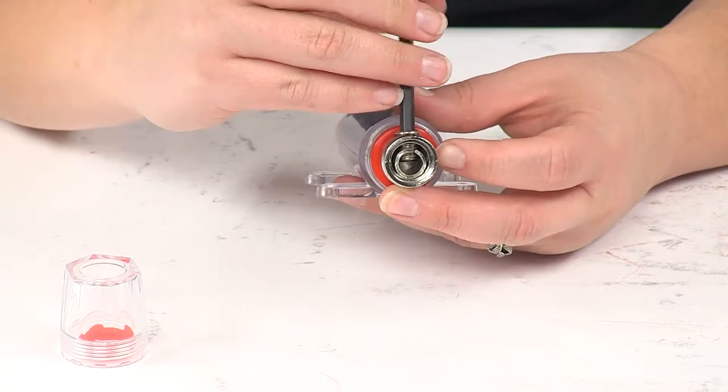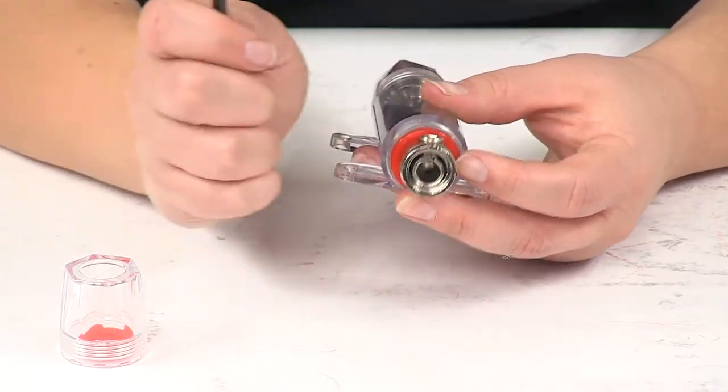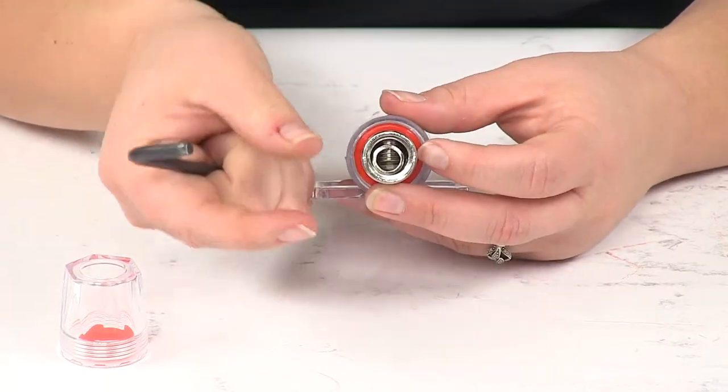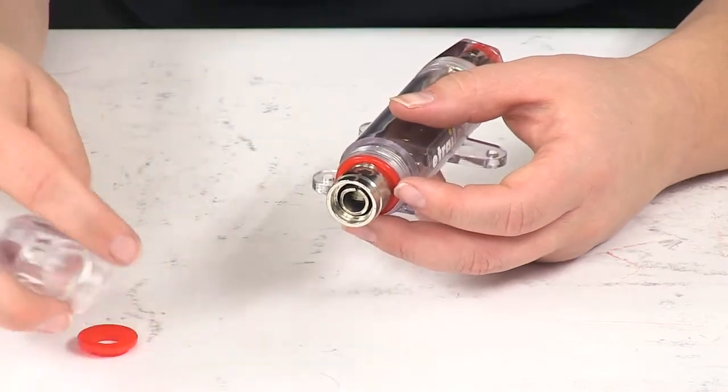So you see as we run that bolt out it opens up to allow that wire to slide in there and then we can tighten that set screw back down and that's going to pinch the wire in place to keep it secure and complete the connection.